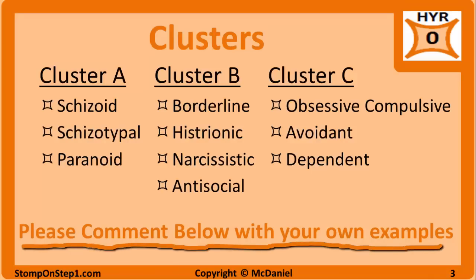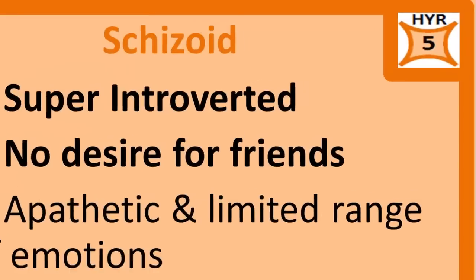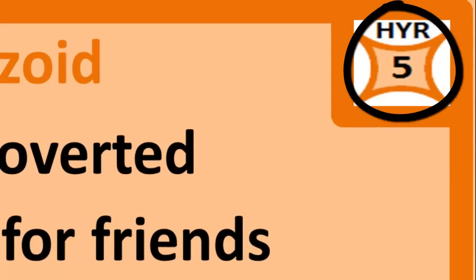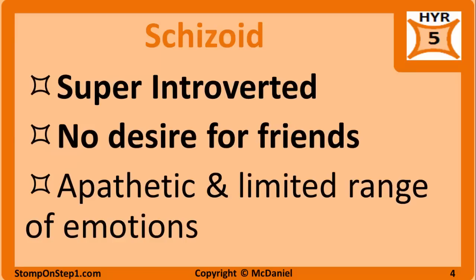If you can think of any other good examples, please comment below. We will start with Schizoid Personality Disorder, which I give a high yield rating of 5. That is a rating scale from 0 to 10 which gives you an estimate for how important each topic is for the USMLE Step 1 Medical Board Exam, based on a number of factors including how often that topic appears in retired Step 1 questions.